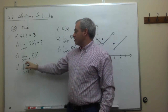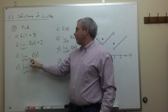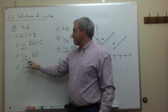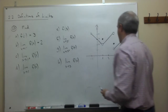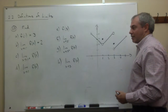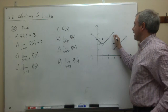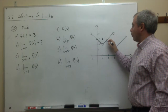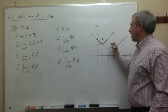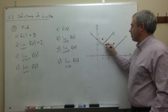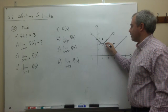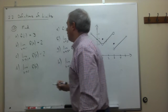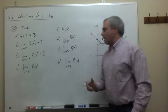Part c is similar — it's asking: what if you start walking towards x = 1 coming from the right, or the positive side of the graph? As I come from the positive side walking towards x = 1, I'm getting closer and closer to a value, and that value is also 2.